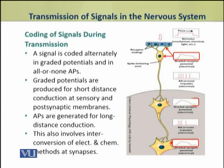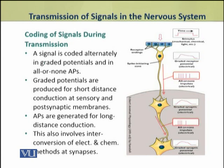The graded potentials are produced for short distance conduction at the sensory and post-synaptic membranes, while action potentials are generated for long distance conduction along the axons. This coding also involves interconversion of electrical and chemical methods at synapses.